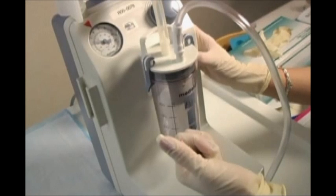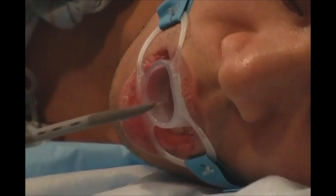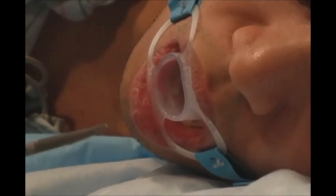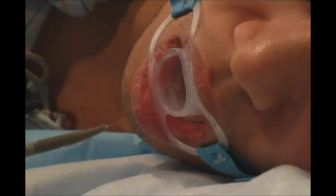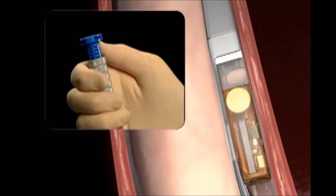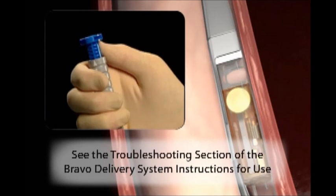Power off the vacuum. Carefully and slowly withdraw the delivery system and discard it according to your local waste management guidelines. If the plunger breaks and cannot be retracted or if the delivery system will not release from the capsule, see the troubleshooting section of the Bravo Delivery System instructions for use.